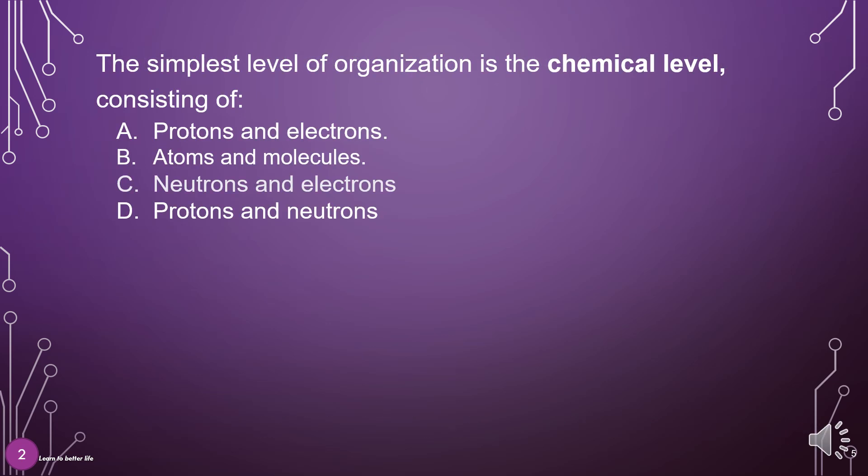The simplest level of organization is the chemical level, consisting of: A. Protons and electrons, B. Atoms and molecules, C. Neutrons and electrons, D. Protons and neutrons. The answer is B: Atoms and molecules.